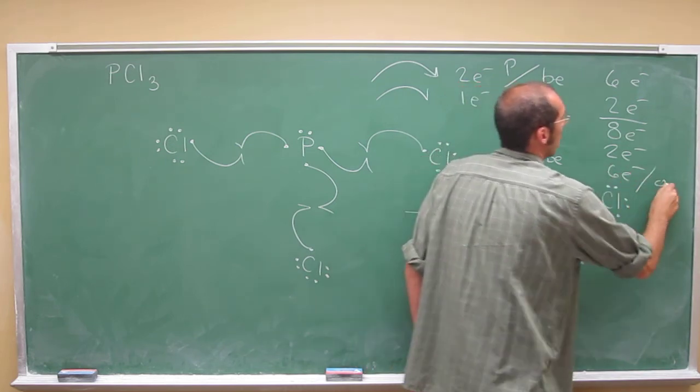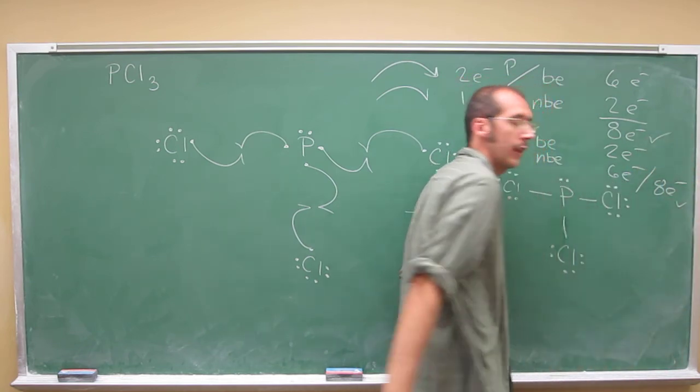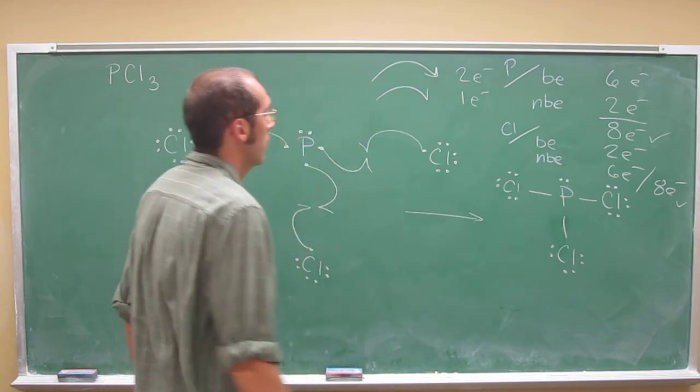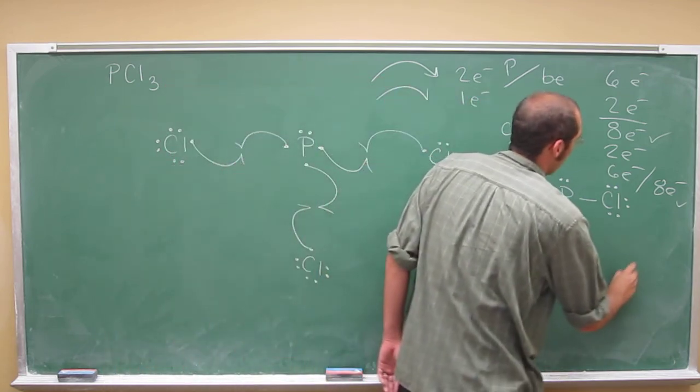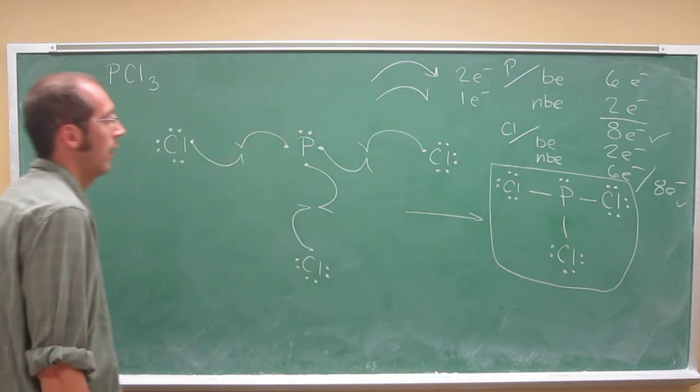Okay? And if we add that up, it's eight electrons, too. So, octet, octet. Everybody's got an octet. Okay? So, this is what we call the Lewis structure of phosphorus trichloride.